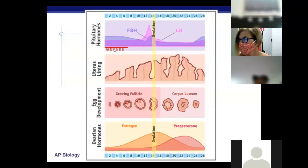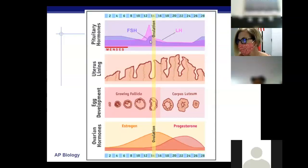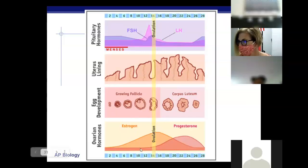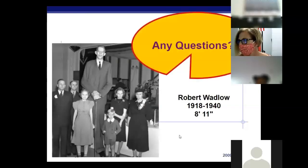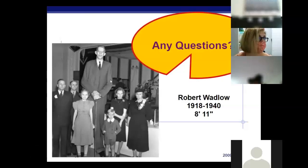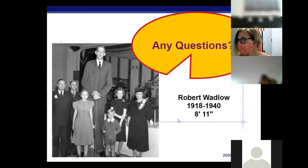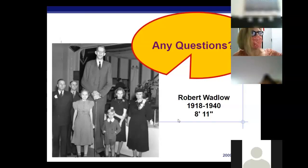This shows the negative feedback where when FSH is high, estrogen is low, and then the positive feedback where levels remain high if there were a pregnancy. If someone has too much growth hormone — like the tallest man in the world at eight feet eleven inches — that's the effect of excess growth hormone. Any questions?